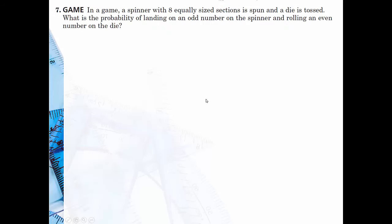Problem seven: In a game, a spinner with eight equally sized sections is spun and a die is tossed. What is the probability of landing on an odd number on the spinner and rolling an even number on the die? We're going to assume that the spinner has one, two, three, four, five, six, seven, eight on it. So four of them are odd and they're out of eight total. And on the die, those are six sided, so that would be three out of six. Multiply both of those. This is one half times a half, which is a fourth.